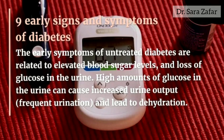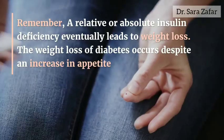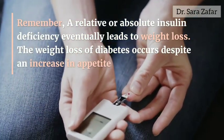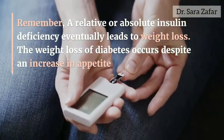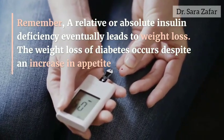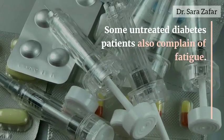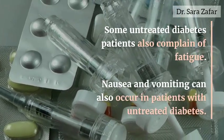Now we'll discuss 9 early signs and symptoms of diabetes. The early symptoms of untreated diabetes are related to elevated blood sugar and loss of glucose in urine. A high amount of glucose in urine can cause increased urine output and can lead to dehydration. A relative or absolute insulin deficiency eventually leads to weight loss, which occurs despite an increase in appetite.